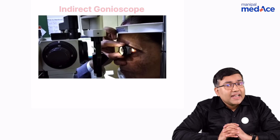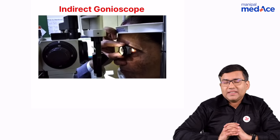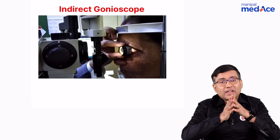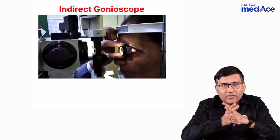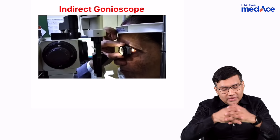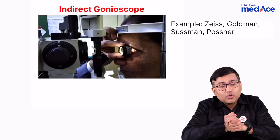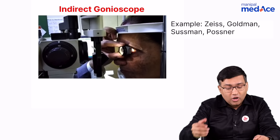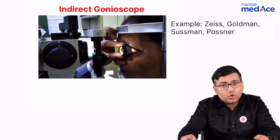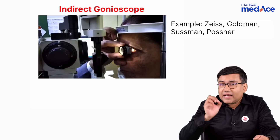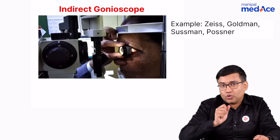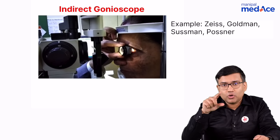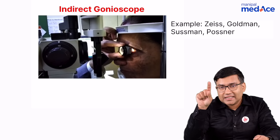This is an indirect gonioscope that is being used. What are the various types of indirect gonioscope? These are the Zeiss gonioscope, Goldman gonioscope, or Pochner gonioscope. They are called indirect gonioscopes because they contain mirrors.